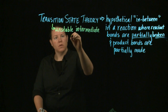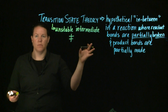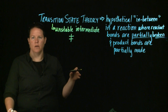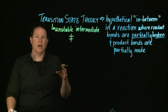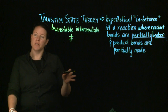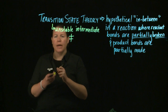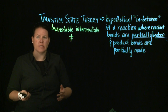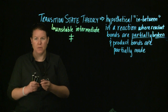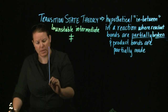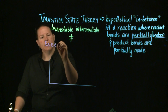The transition state is often shown with a double cross — a symbol where you have the sense of something being made and something being broken. The most common place we conceptualize transition state theory is with energy diagrams.